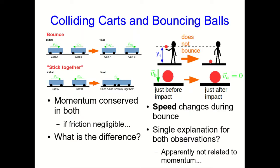We've got these two observations: one about different kinds of cart collisions and one about different kinds of ball bounces. Can we come up with a single explanation for both? And we can guess that apparently it's not something to do with momentum.